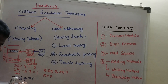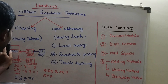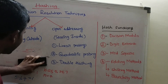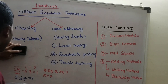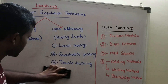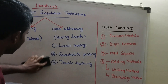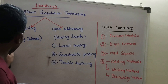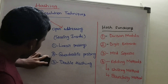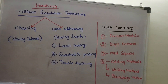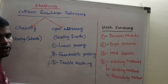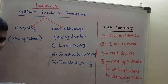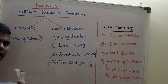This is chaining — we are avoiding collision using any one of these techniques. In chaining, we always store the values outside the hash table, but we keep the address inside the hash locations. Collision resolution techniques are mainly two types: one is chaining and the other is open addressing. Open addressing is divided into three parts: linear probing, quadratic probing, and double hashing.